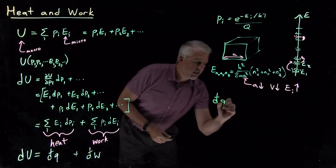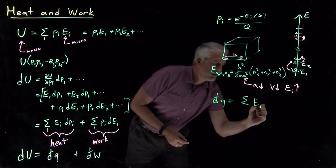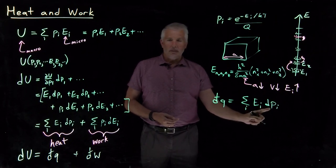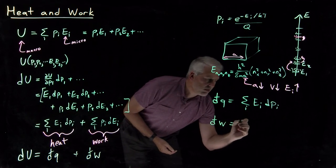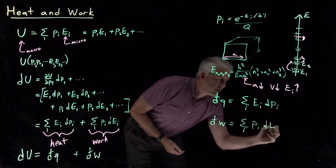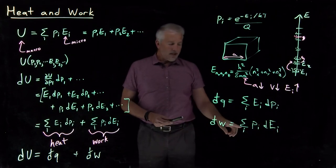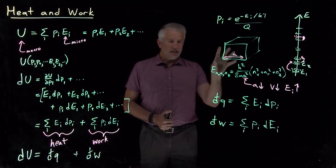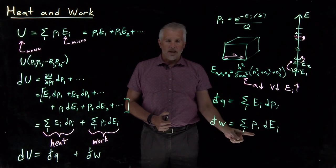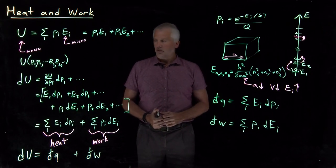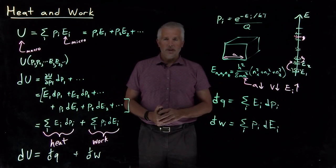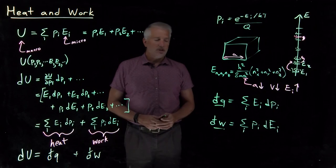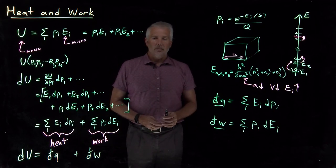As definitions go: heat is the sum of the Ei dPi's — a transfer of energy into a system that changes the system's energy only by changing the populations of the energy levels. Work is the opposite: mathematically the sum of the Pi dEi's, or more descriptively, a transfer of energy into or out of a system that changes the system's energy specifically by changing the energy levels without directly changing the occupation of those energy levels. That's what we mean by heat and work in a technical sense in physical chemistry. The next step will be to spend more time looking at heat and work and how they sum to make energy, including not just differential amounts but more finite amounts as well.